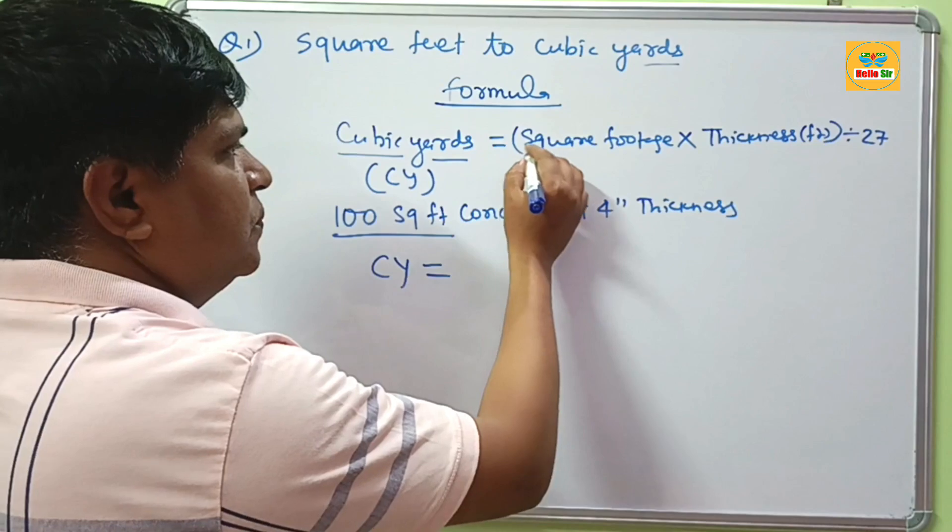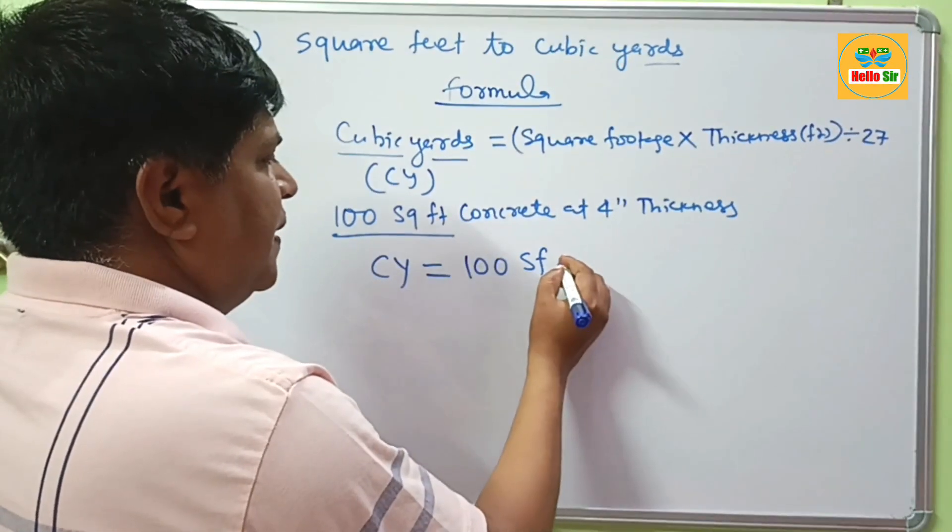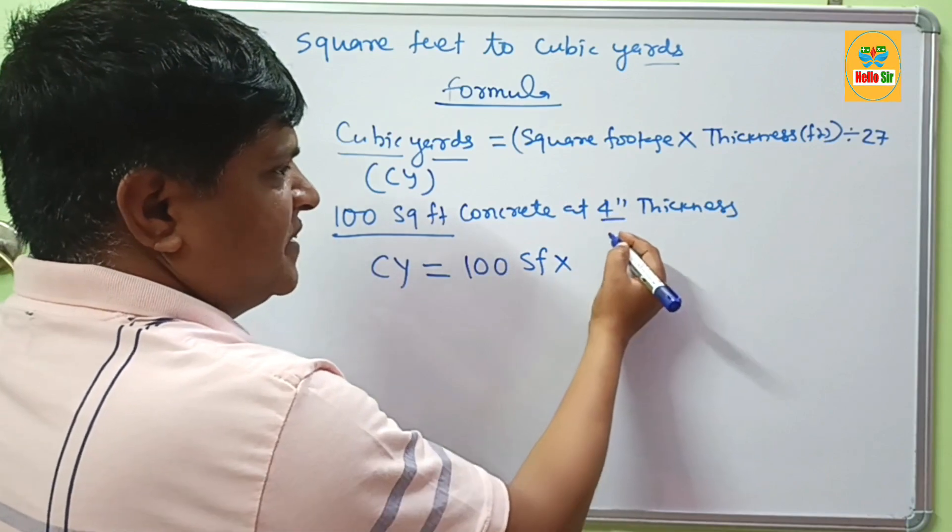CY equals SF. You have 100 SF, and the thickness is 4 inches here.